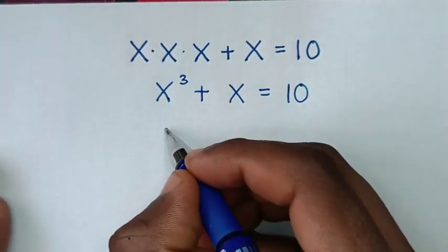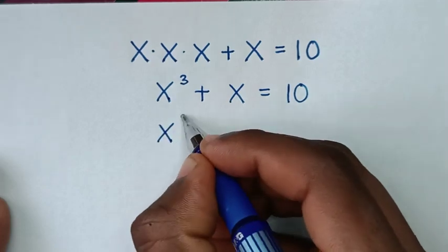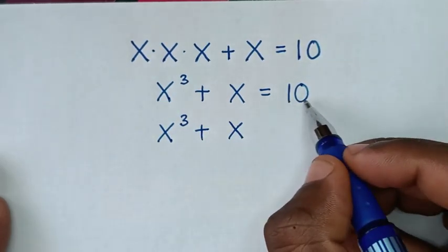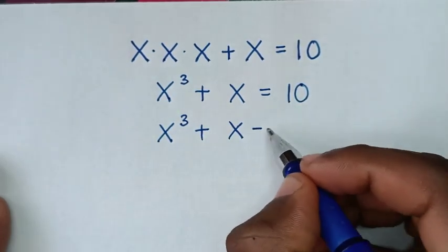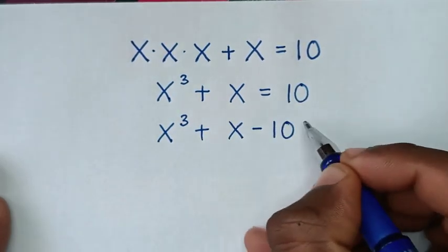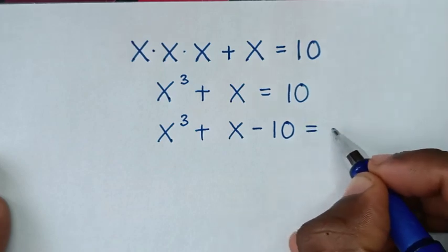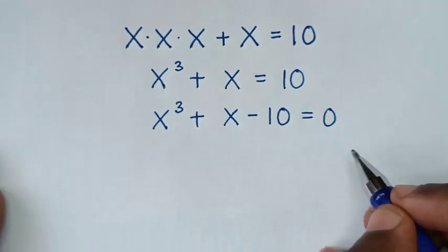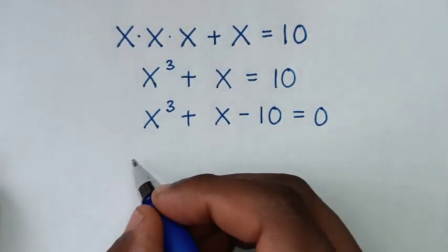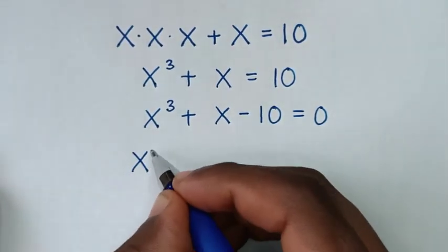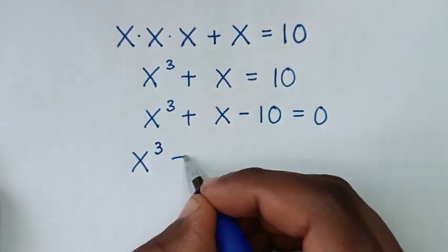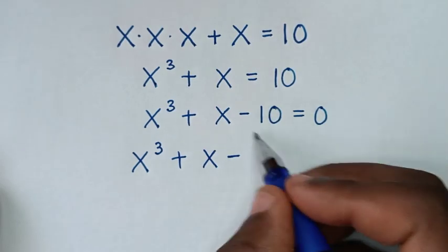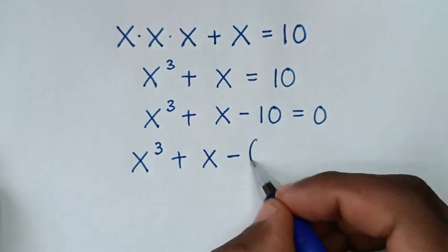Then it will be x power 3 plus x. We take 10 to this side, so it will be minus 10 is equal to 0.